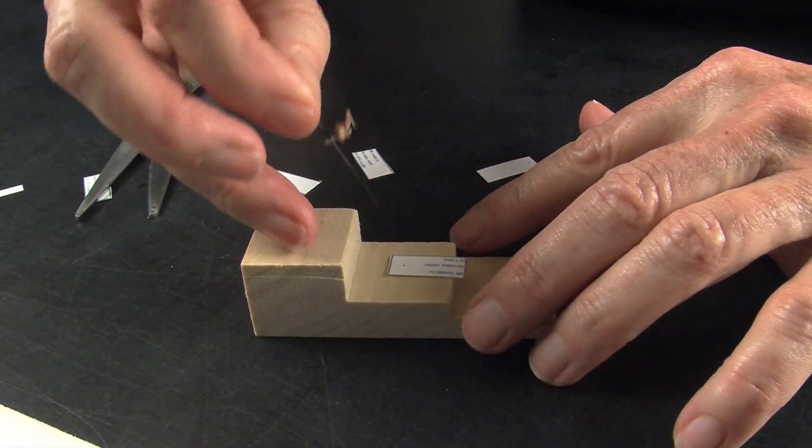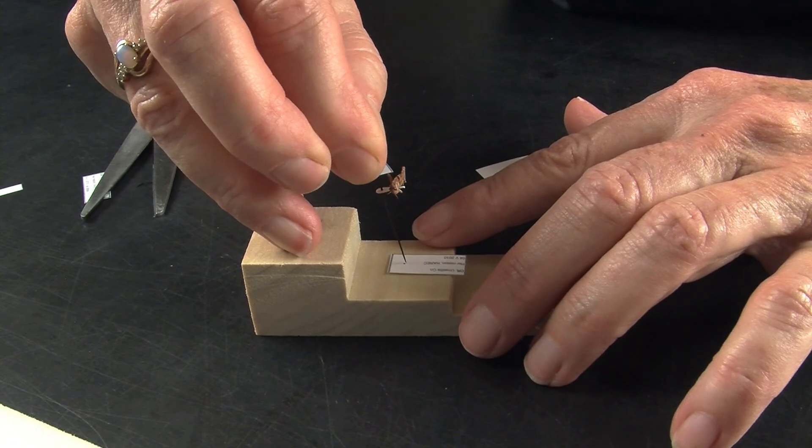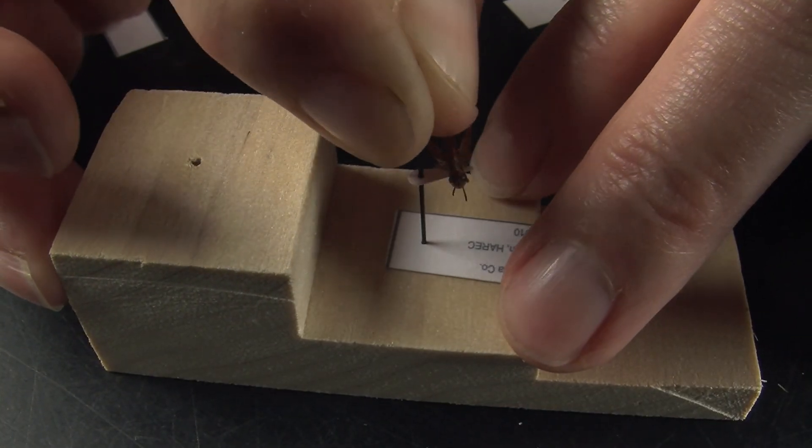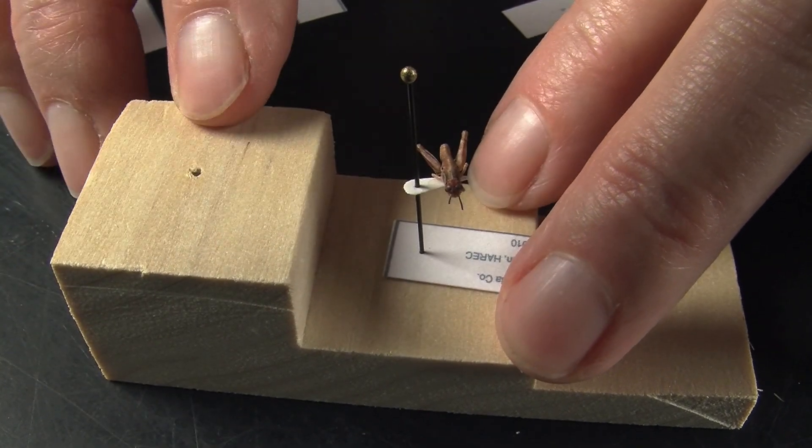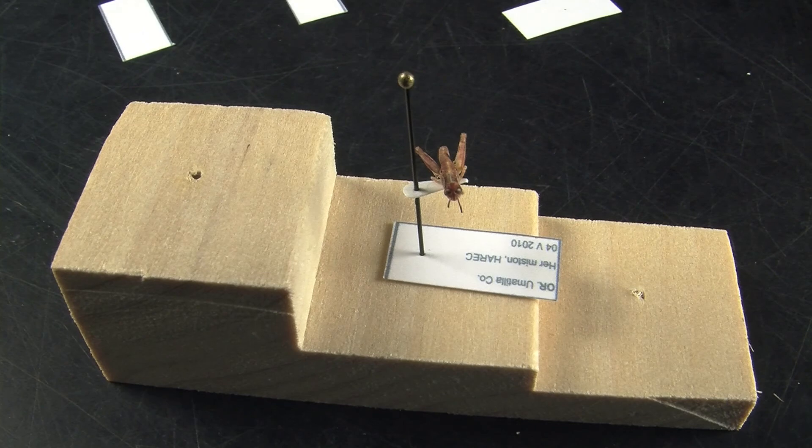Bring the small insect over and position it on the right-hand side of the label so that you can read the label off to the left. This is how we would want to pin our smaller insects.